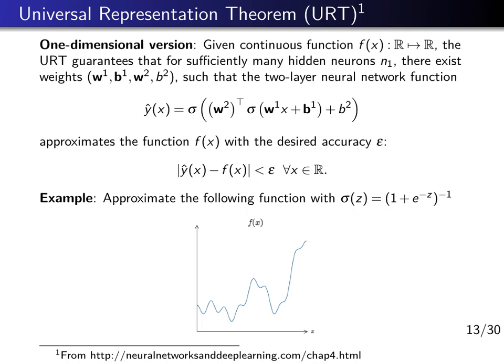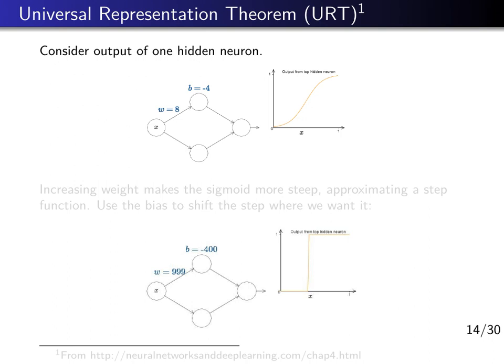We now illustrate how proofs for universal representation theorems typically work. Consider a small neural network with one input neuron, two hidden neurons, and one output neuron. Looking at the first hidden neuron with weight w equal to 8 and bias b equal to minus 4, this logistic neuron produces the graph shown — a logistic function positioned and squeezed as a function of w and b.